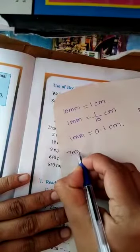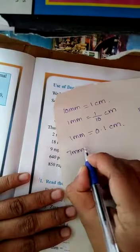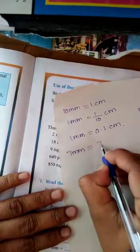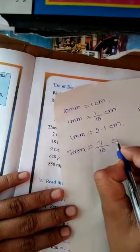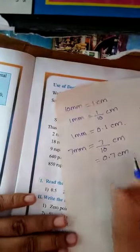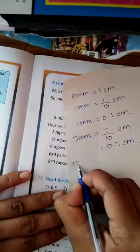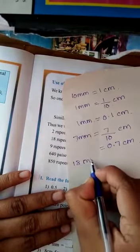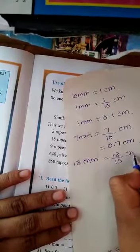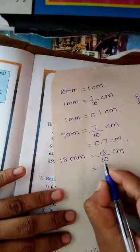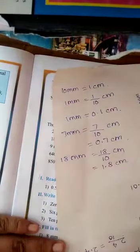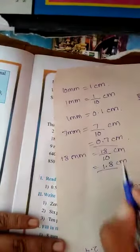Now 7 mm: 1 mm is 1/10th, similarly 7 mm is 7/10 cm, its decimal form is 0.7 cm. Now 18 mm is 18/10 cm, divided by 10, its decimal form is 1.8 cm.